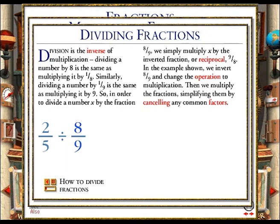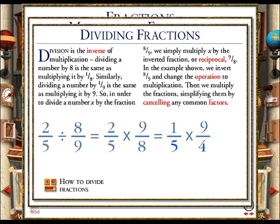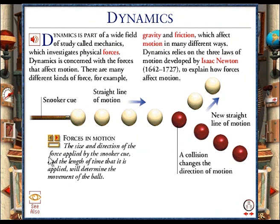In order to divide 2 over 5 by 8 over 9, we start by inverting the second fraction to make 9 over 8 and changing the division sign to a multiplication sign. Having done this, we cancel any common factors. 2 divides into itself once and into 8 four times. We then multiply across the 1 by the 9 and the 5 by the 4 to get our answer of 9 over 20.